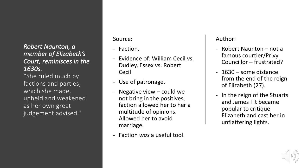Let's look at the author. Robert Norton — I'd never heard of him, I had to look him up. If he's not on the specification and not in the textbook, we can use our historical inference skills to say he probably wasn't a very famous courtier and certainly wasn't a Privy Councillor. So he's probably quite frustrated by faction and Elizabeth's use of patronage, because he never gets any. That's going to flavour his writing. He's also writing in 1630, which is 27 years after Elizabeth died. And finally, in the reign of the Stuarts — from James I onwards — it became really popular to critique Elizabeth and cast her reign in an unflattering light, partly because she was a woman. So these are all things we need to think about.